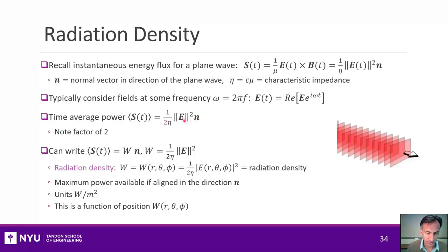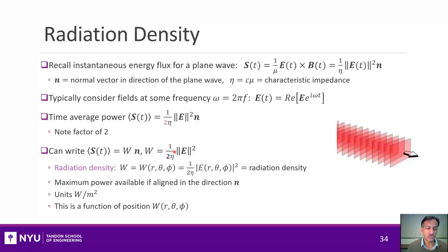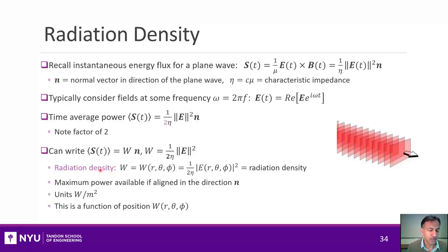This average magnitude — a scalar number — is called the radiation density. The radiation density tells you the magnitude of the average energy flux, not the direction. For any antenna, it will be a function of both the distance from that antenna and the angle, since it can radiate more power in some directions than others. The units are the same as S, which is watts per meter squared — power per area, since we can think about receiving power as the amount captured in some unit area.